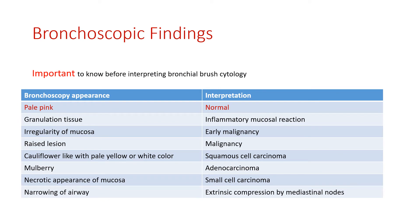Regarding bronchoscopic findings, it is important to know the normal appearance before interpreting any cytology. The normal color of the airway tract is pale pink. Granulation tissue indicates inflammatory mucosa. Irregularity of mucosa can be an early malignancy. A raised lesion can be malignancy. A cauliflower-like lesion is squamous cell carcinoma, a mulberry appearance is adenocarcinoma, and narrowing of the airway can indicate extrinsic compression by mediastinal nodes.